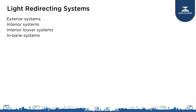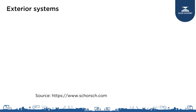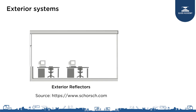Redirecting the daylight can be achieved by many ways. We can have exterior systems to redirect the sunlight, we can have interior systems, interior louver systems, and in-pane systems. The exterior system is the most effective way to bring daylight into the building besides openings in the roof, and basically they are reflecting elements in front of the facade. The light is reflected from these and it goes into the building through the daylight glazing.